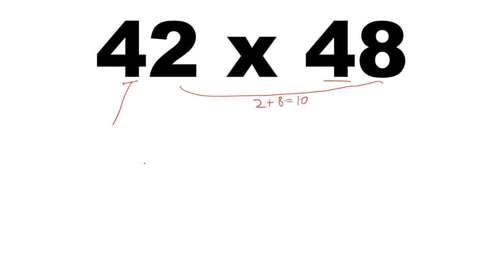In such multiplications, you just take the tens digit and multiply it with its next counting number. For example, after 4 we have 5 — the next counting number, not the digit in the problem.